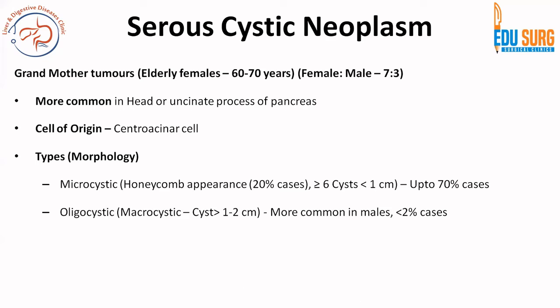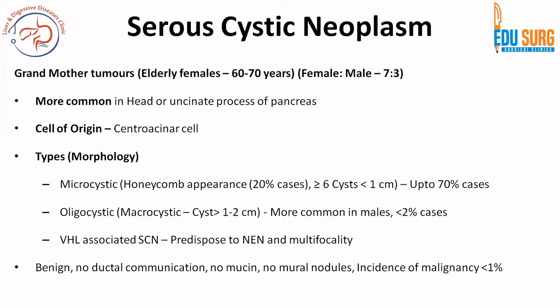In microcystic SCN, there are more than 6 cysts each less than 1 cm in size. When we talk of oligocystic, macrocystic, or multilocular cysts, this type is more common in males and represents less than 2% of cases of serous cystic neoplasm. Another type is VHL-associated SCN, which is a chromosome 3 syndrome and predisposes to neuroendocrine neoplasm and multifocality. So to summarize: microcystic is the classical SCN, oligocystic is more common in males, and VHL-associated SCN predisposes to neuroendocrine neoplasm and multifocality.